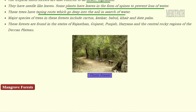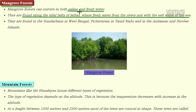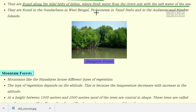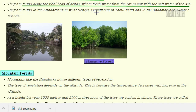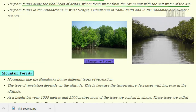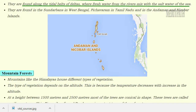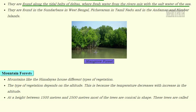Mangrove forests survive in both fresh water and salt water — these plants mostly live in water, with their roots situated in water rather than soil. They are found along the tidal belts of deltas, where fresh water from rivers mixes with the salt water of seas. These forests are found in the Sundarbans in West Bengal, Pichavaram in Tamil Nadu, and the Andaman and Nicobar Islands. In this image, you can see forests present near a water-clogged area.